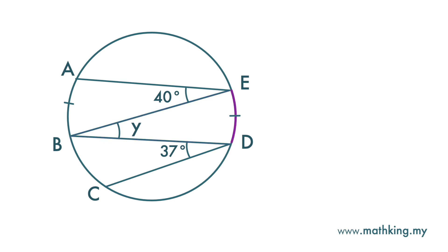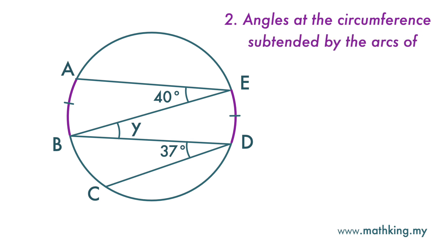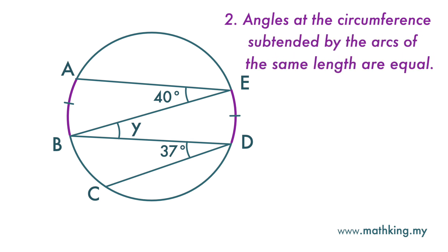Note that arc DE and arc AB are equal in length — note the two ticks here. Angles at the circumference subtended by arcs of equal length are equal.